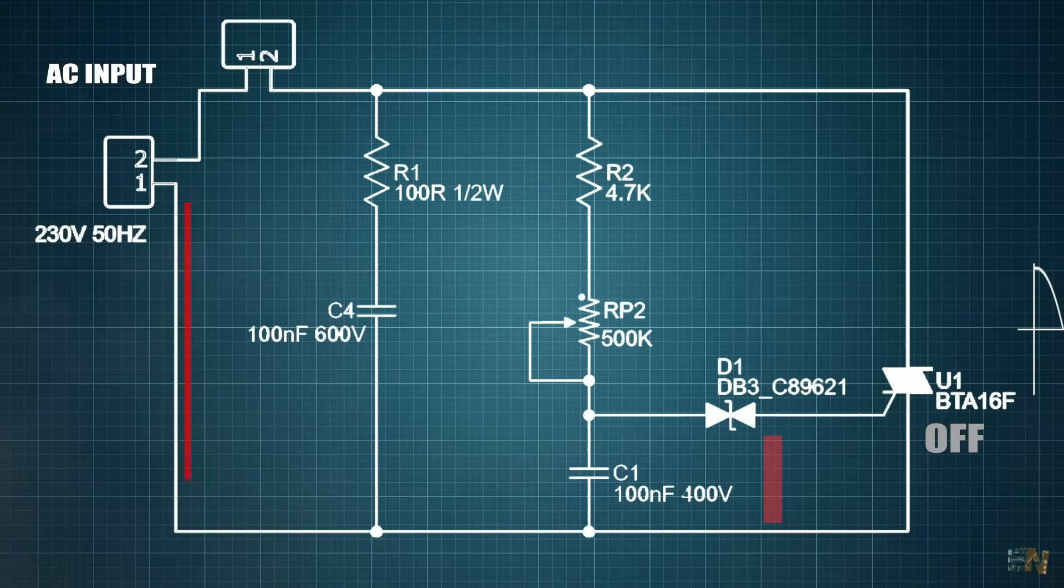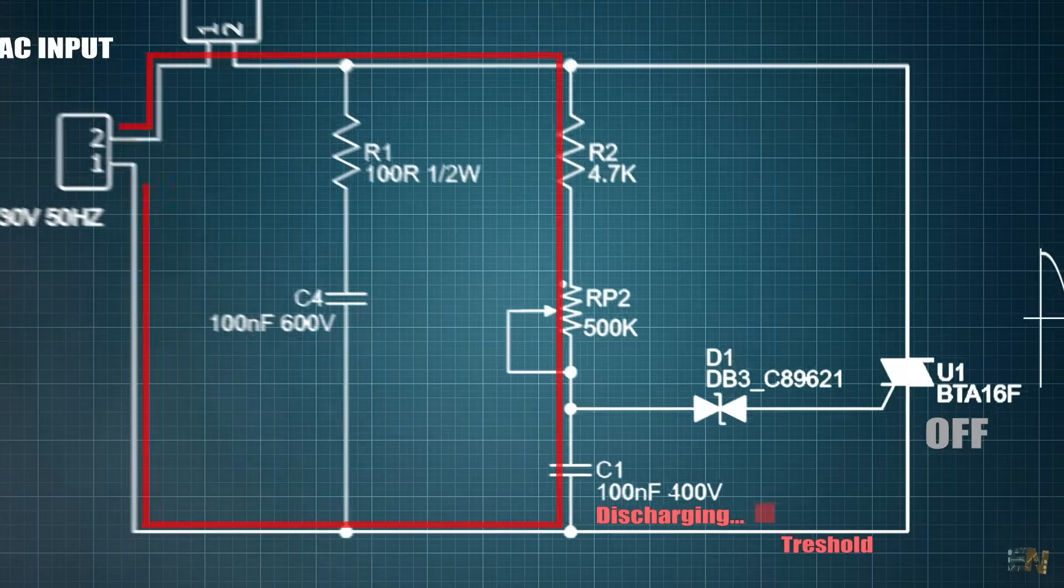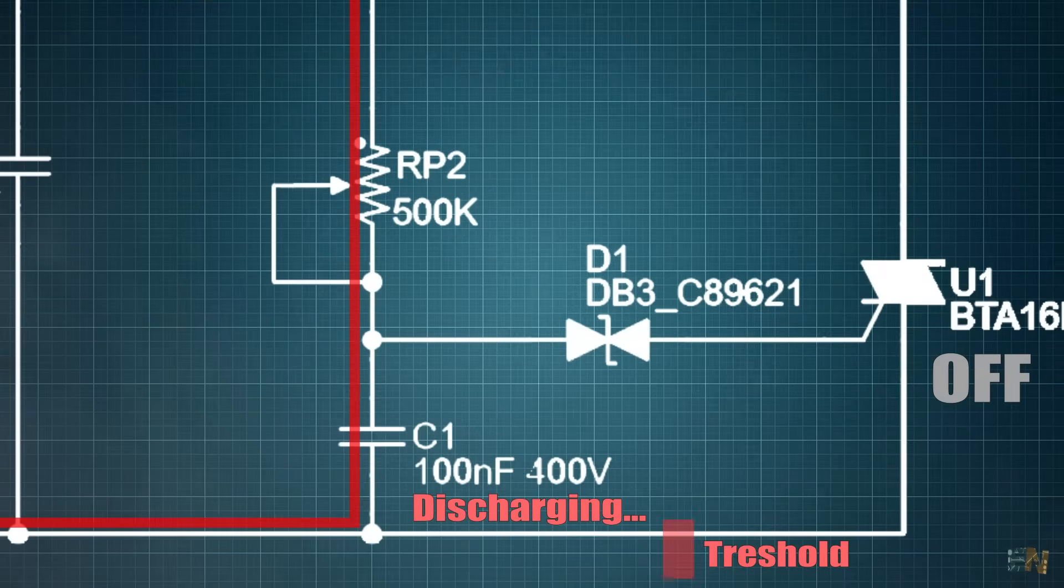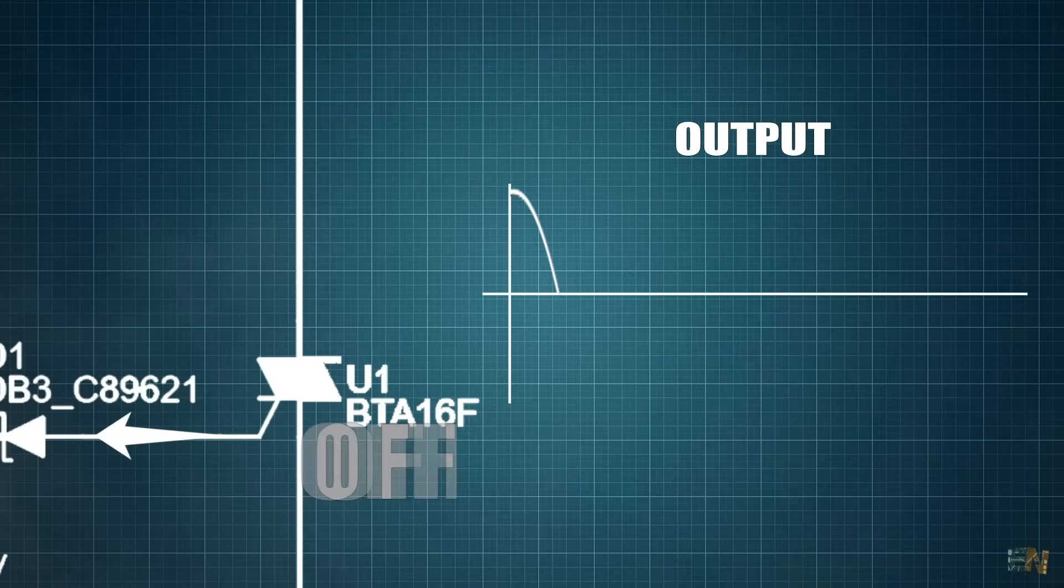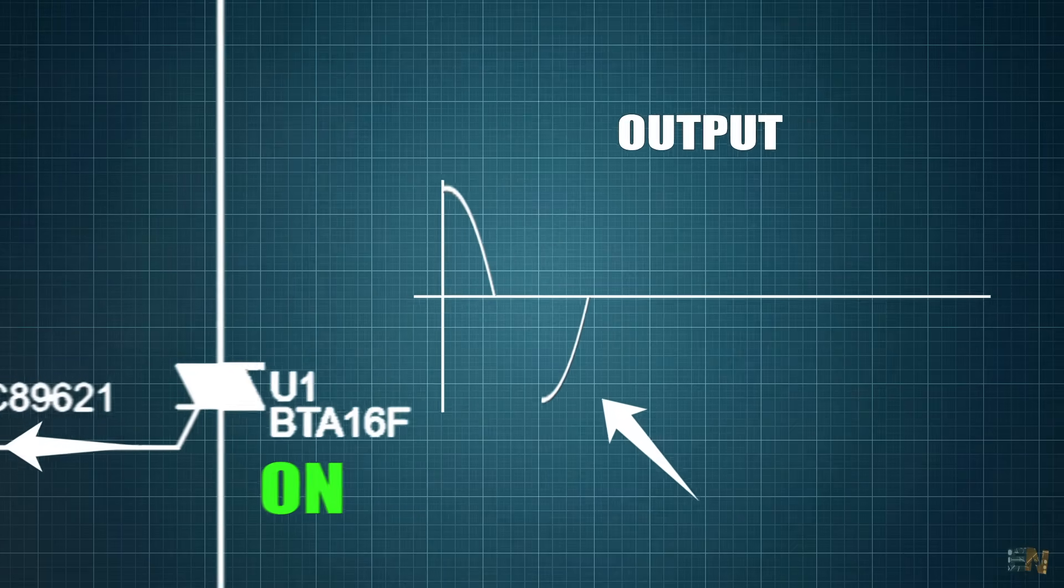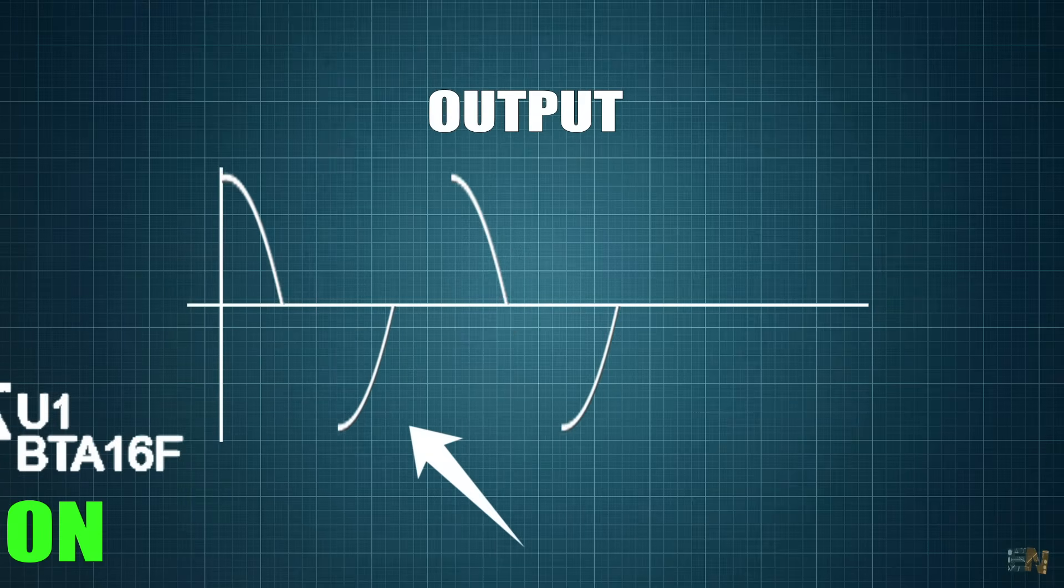But now that small capacitor is charging up with negative polarity. And again, when the capacitor reaches a certain threshold value, the diac will allow the current flow once again and activate the triac gate again. As you can see, just by charging up the small capacitor, we can create those firing pulses at the triac gate.